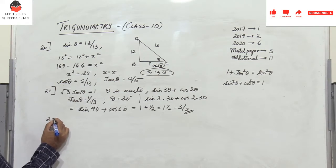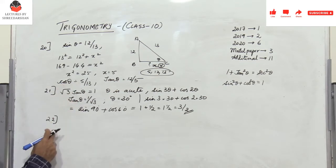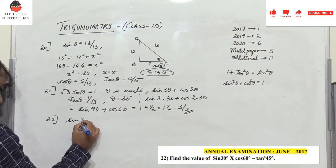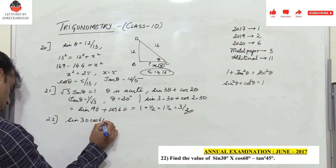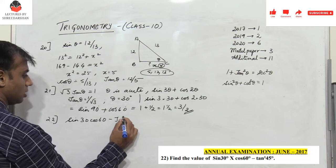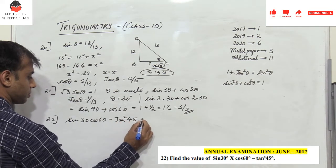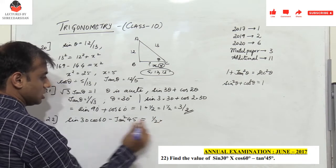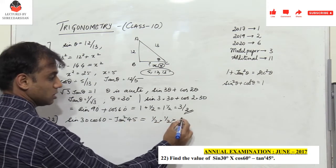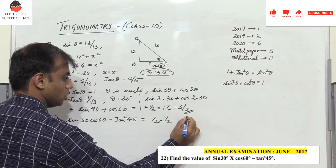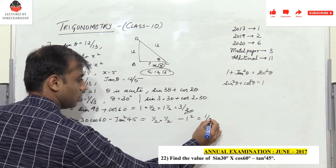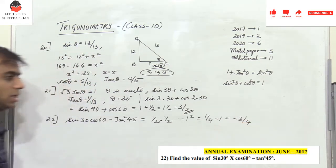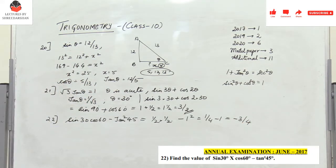Problem 22 is from the 2017 question paper: find the value of sin30°·cos60° − tan²45°. sin30° = 1/2, cos60° = 1/2, tan45° = 1. So: (1/2)(1/2) − 1² = 1/4 − 1 = −3/4.